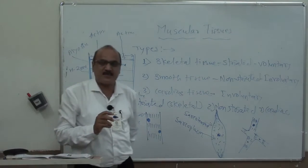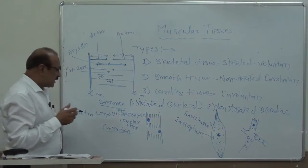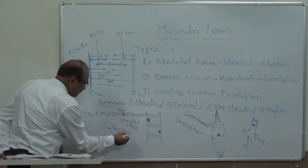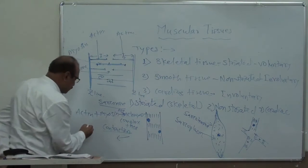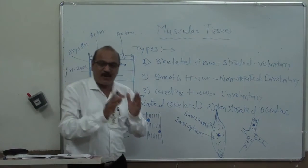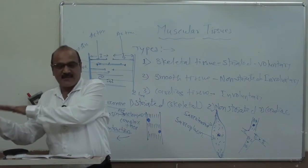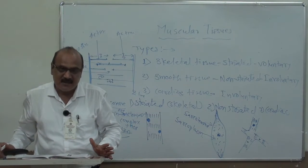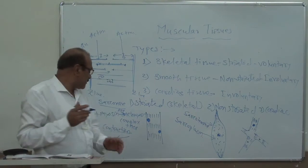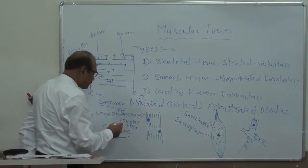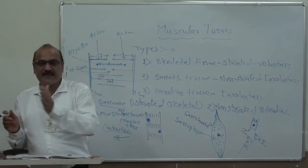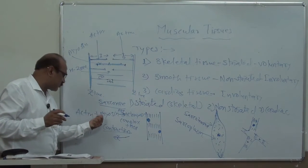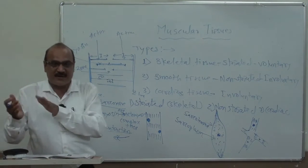Calcium ions play an important role in the contraction of muscles. During relaxation, the actomyosin complex is reversed — converted back to actin plus myosin. This process is called relaxation. Magnesium ions play an important role in relaxation. So contraction is actin + myosin → actomyosin complex, and relaxation is the reverse: actomyosin complex → actin + myosin.